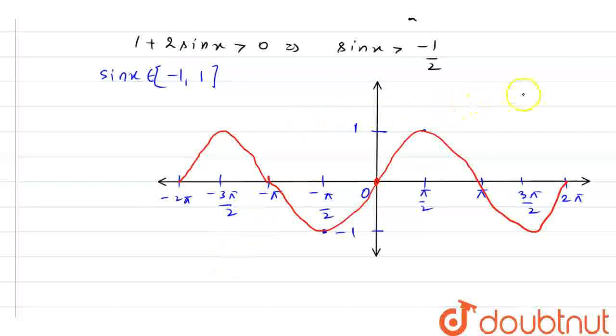Now what we need is sin x greater than minus 1 by 2. Now where is minus 1 by 2? Let's suppose this is my minus 1 by 2. Now this value comes at minus π by 6. This value comes at minus π by 6.